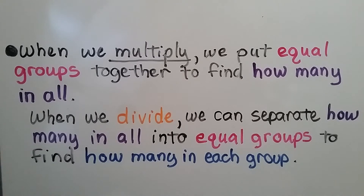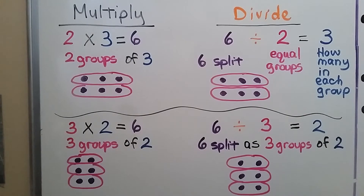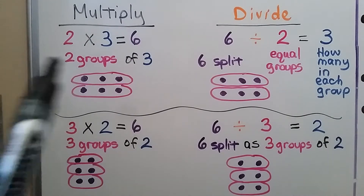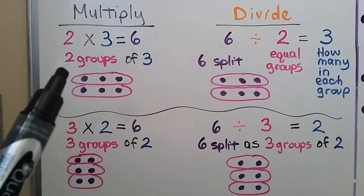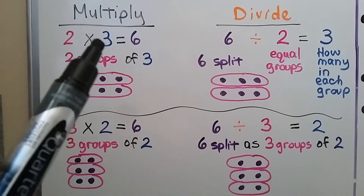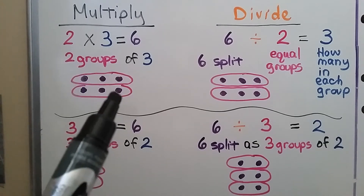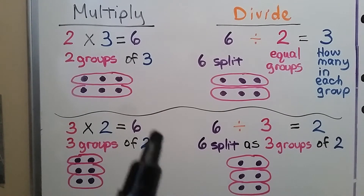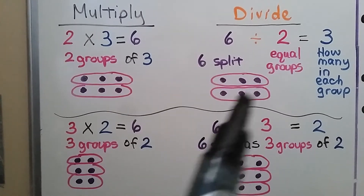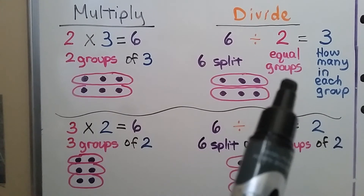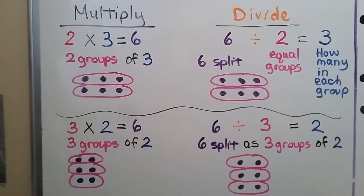When we multiply, we put equal groups together and combine them to find how many in all. When we divide, we separate how many in all into equal groups to find how many in each group. For example, 2 times 3 equals 6 means we have 2 groups of 3, with 6 in all. When we divide 6 into 2 equal groups, there'll be 3 in each group.